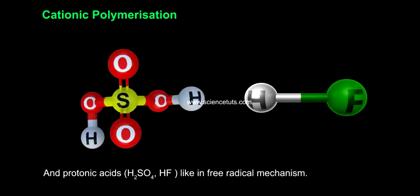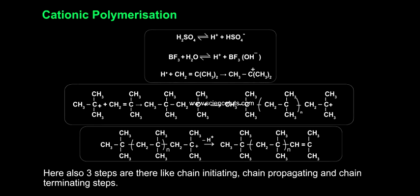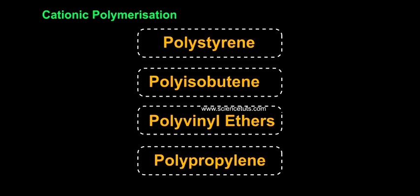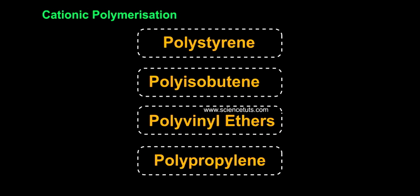And protonic acids such as H₂SO₄ and HF. Like in the free radical mechanism, here also three steps are involved: chain initiating, chain propagating, and chain terminating steps. Examples include polystyrene, polyisobutene, polyvinyl ethers, and polypropylene.